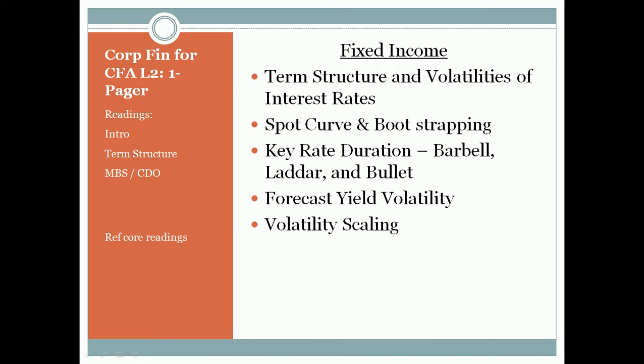If you have some risk of default, then the spread you are offering should justify that default. For example, if you have a two percent probability of default, the return should be very similar to a no-default risk-free rate — that is essentially a risk-neutral probability of default structure. You need to understand the yield curve of a 10-year USD bond and how we use LIBOR rates.